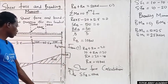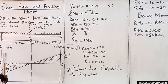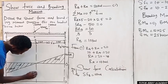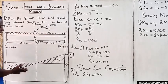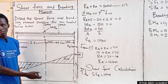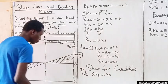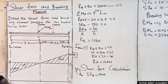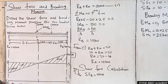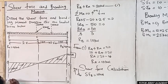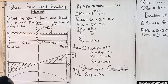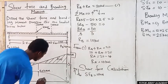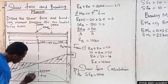For the bending moment diagram: BM at B and BM at A are both zero. BM at C is 25 kilonewton-meters, which is positive. Since there is an inclined line on the shear force diagram representing the UDL, the bending moment diagram is represented by a parabolic curve from B up to 25 at C and back down to zero at A.